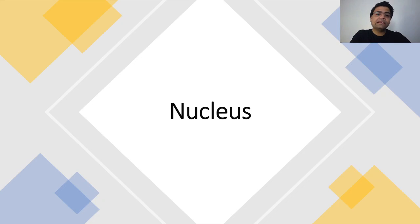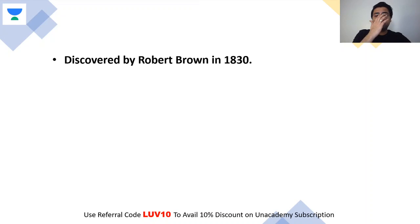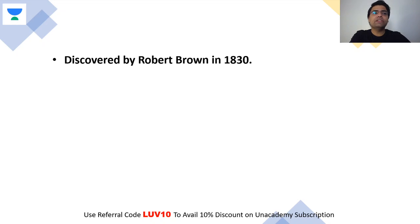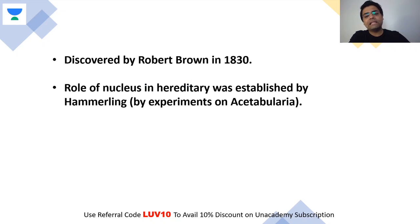First, let's know the basics about the history. The Nucleus was discovered by Robert Brown in 1830. The Nucleus is the main boss, and it controls heredity — it controls everything.